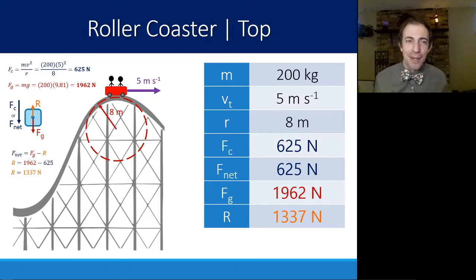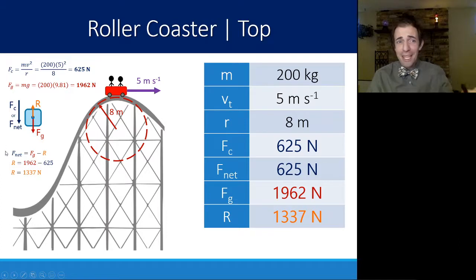My biggest recommendation here is don't try to think of this as an equation. Instead, think of it as a simple picture that you know that down has to be overall 625 and Fg is already 1,962. What does R have to be so that it cancels out Fg just enough to give you 625? So don't think of it as a set equation. Think of it as a picture that you're just trying to solve for the missing force.